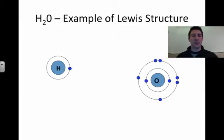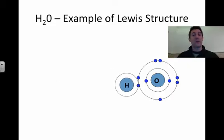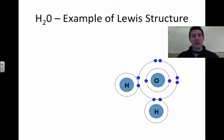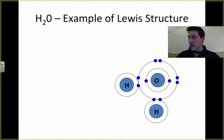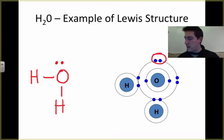Let's use water as an example of drawing a Lewis structure. We know that hydrogen has one valence electron and will be happy when it has two. Oxygen has six valence electrons and will be happy when it has eight. That's why hydrogen and oxygen share electrons in a covalent bond to make water. If we draw this out in Lewis dot, we've got an oxygen bonded to a hydrogen on one side and another hydrogen below it, and then two unpaired valence electrons on the oxygen.